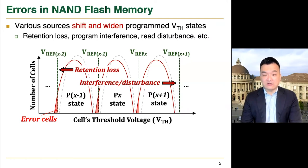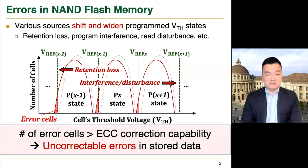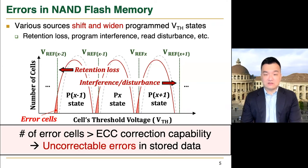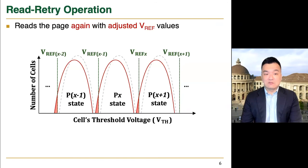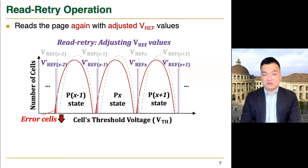If a cell's threshold voltage value moves beyond the corresponding read reference voltage, reading the cell increases an error, and if the number of such cells becomes larger than the ECC correction capability, it introduces uncorrectable errors. This happens quite frequently in modern SSDs, but increasing ECC capability requires significant latency, power, and area overheads. To address this, modern SSDs commonly adopt read retry, which reads the page again with adjusted read reference voltage values.